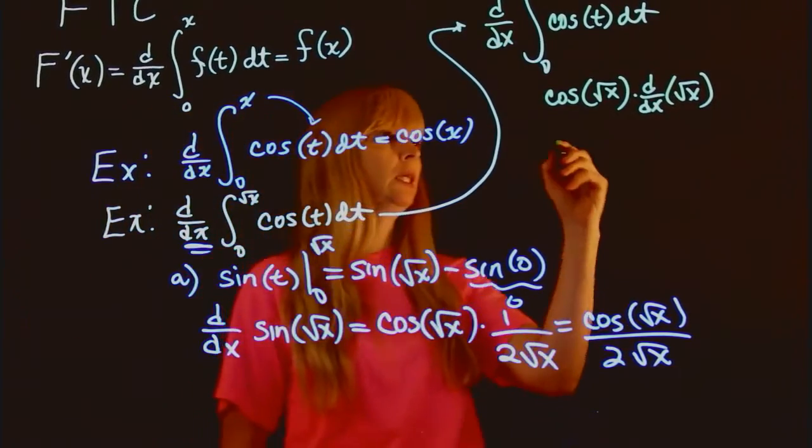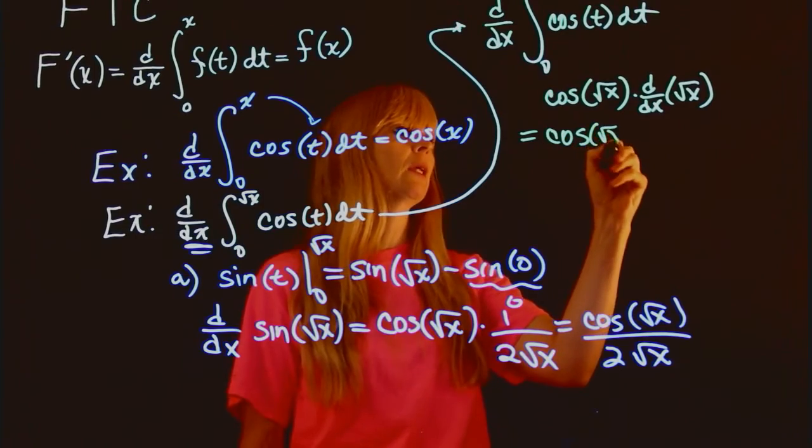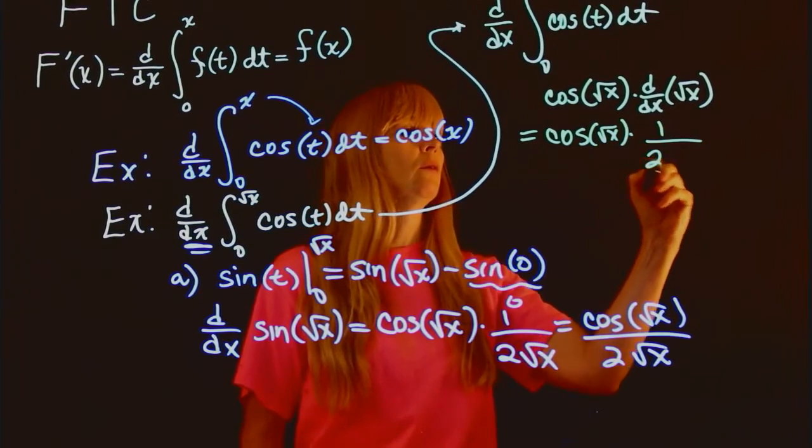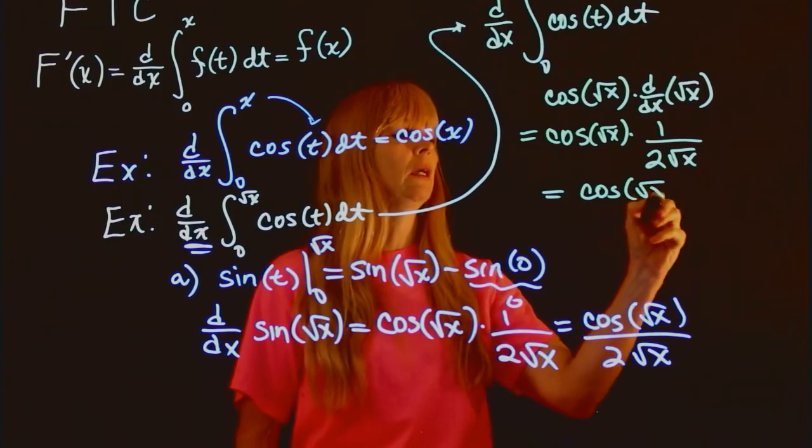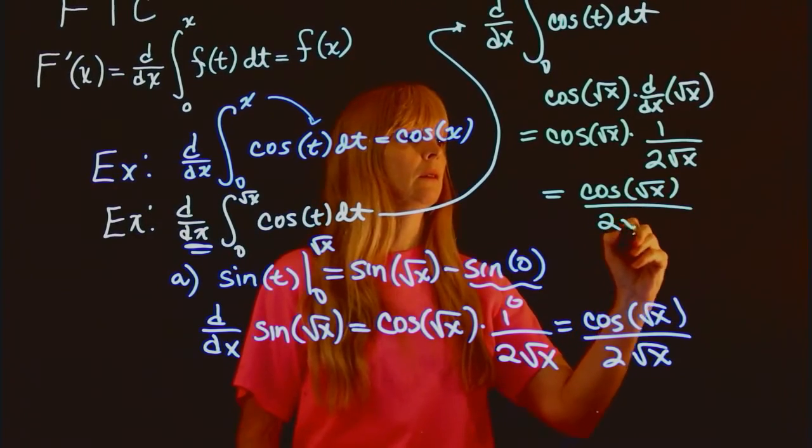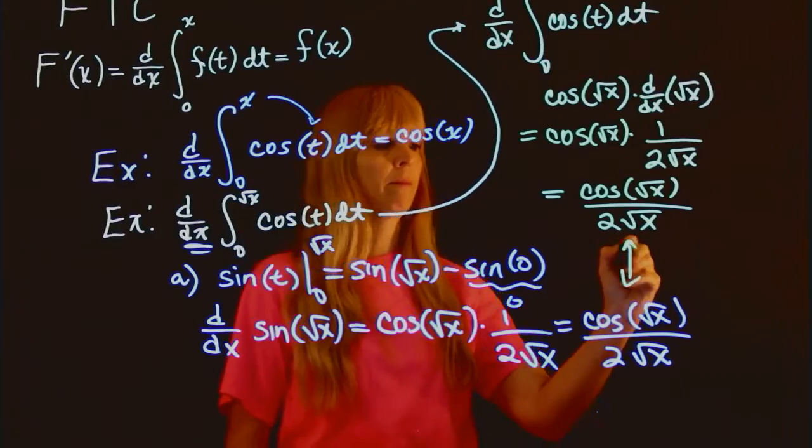Well, as you can see, once I differentiate that piece, I'm going to get the same thing: 1 over 2 square root of x, which gives me the same answer as below.